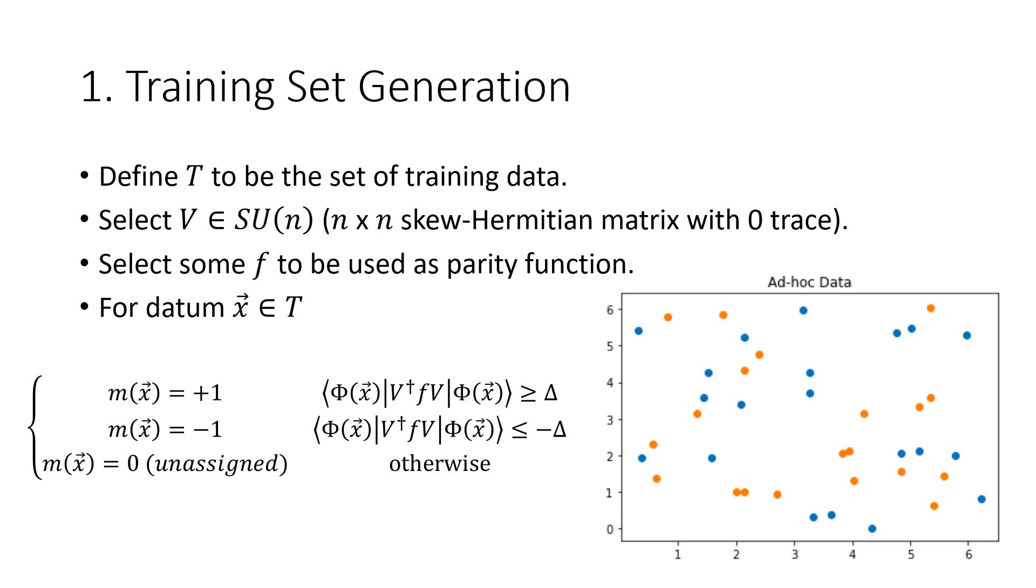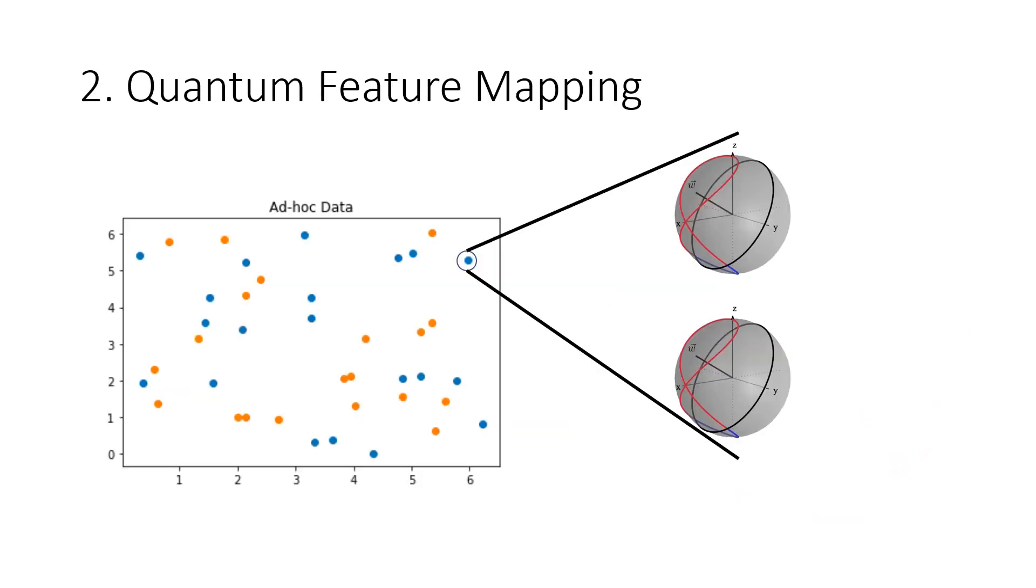This mapping depends on the states phi above, but how do we generate these states? It turns out these states are generated by mapping the data from each point onto two qubits, one qubit for each feature.